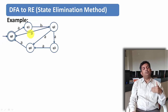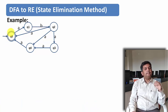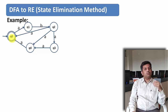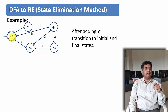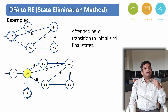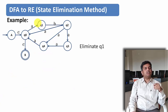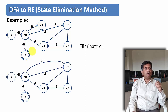Let us say this is a finite automata and we want to find the regular expression. Here q0 is the initial state as well as the final state, and there is an outgoing edge from the final state and an incoming edge to the initial state. After adding the epsilon transitions, I have created one more state with an epsilon transition to the earlier initial state, and one more state which becomes the final state with an epsilon transition from q0. Now let us try to eliminate q1. If I eliminate q1, from q0 to q2 there will be a single path with transition ab.